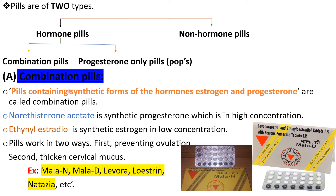The first type is the combination pill. As the name indicates, combination pills contain synthetic forms of both Estrogen and Progesterone hormones — meaning man-made hormones. The synthetic progesterone is Norethisterone acetate, which is available in high concentration in the pills. The synthetic estrogen is Ethinyl estradiol, which is available in low concentration. This difference in concentration is a very important point.